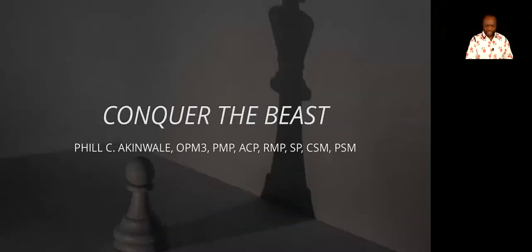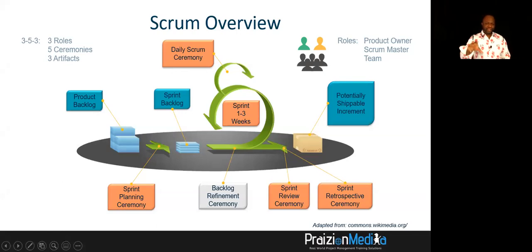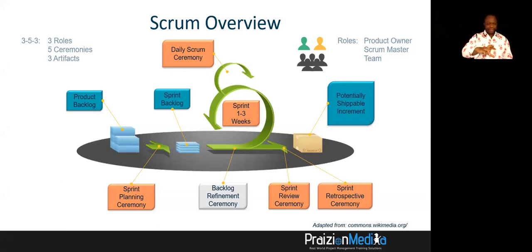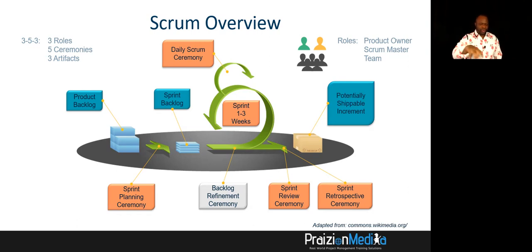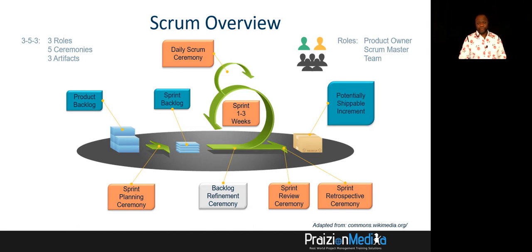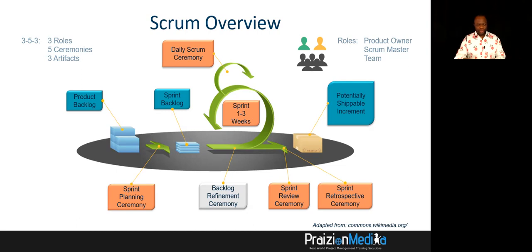Let's go there quickly. Welcome to Conquer the Beast. The first one I want you to be aware of is the scrum overview. You've seen this from a lot of sources and a lot of variations — Mountain Go put this out and a lot of people have modified it. It's a really great starting point for you to build your understanding of agile on. As you can see, we've got five ceremonies, three roles, three artifacts. You need to know what exactly this is all about.